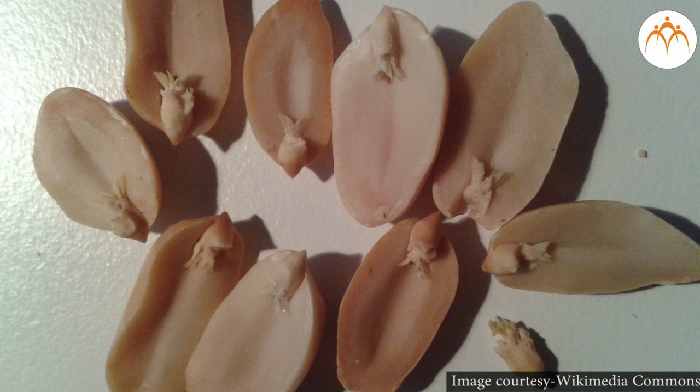Soak some pea, groundnut, maize and jowar seeds in water overnight. Next day, try to remove their skin. You can remove skin of pea and groundnut easily, but cannot remove skin of maize and jowar. After removal of seed cover from pea and groundnut seeds, press them with your fingers. Do you see that there are two parts formed in the seed?